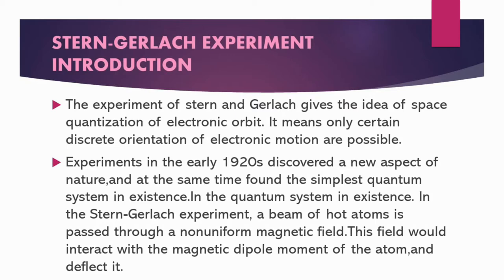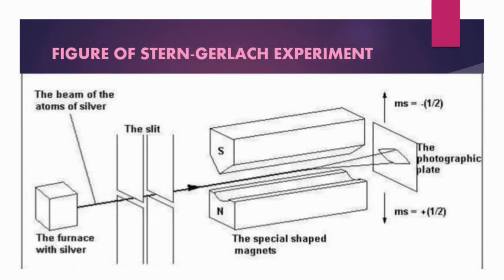This experiment helped us to measure the spin component of neutral particles along the jet axis. As we see in this figure, the silver is placed inside the oven and heated to a very high temperature so that the silver metal comes into atomic state. After passing through the magnetic field, two beams of silver atoms emerge, suggesting that some sort of quantized angular momentum is associated with the charged particles, which is recorded on the photographic plate.